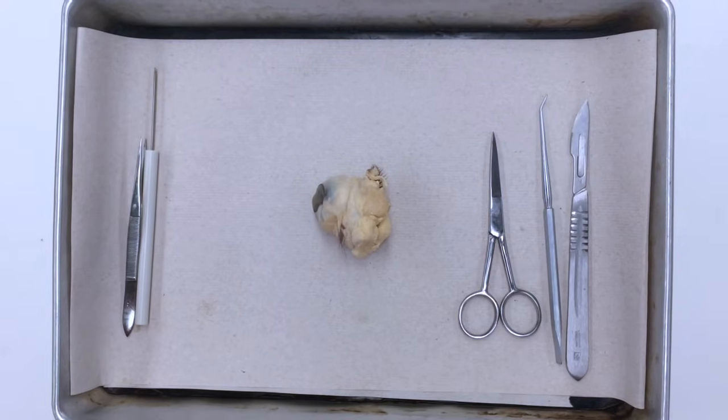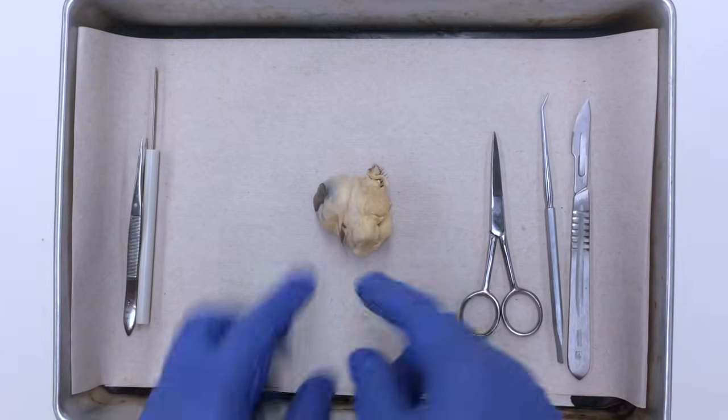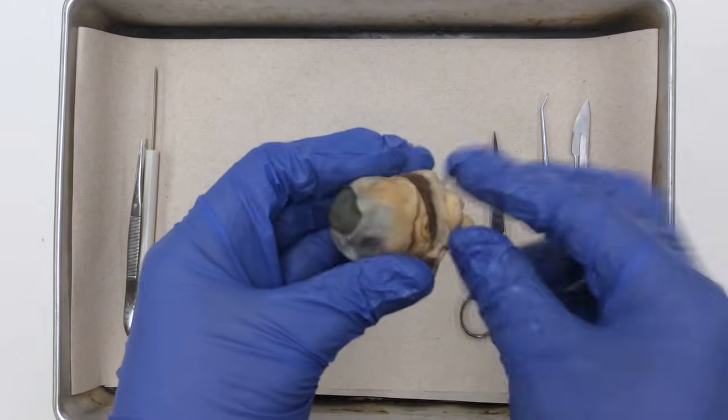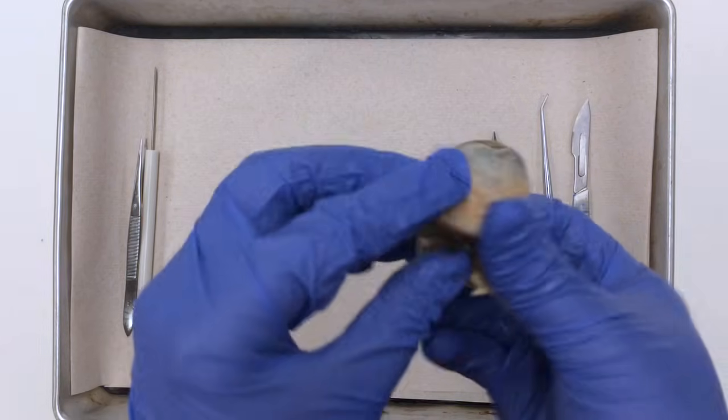Today we're going to be dissecting the sheep's eyeball. Notice the sheep's eyeball contains a lot of fat around it, along with eyelids and eyelashes.